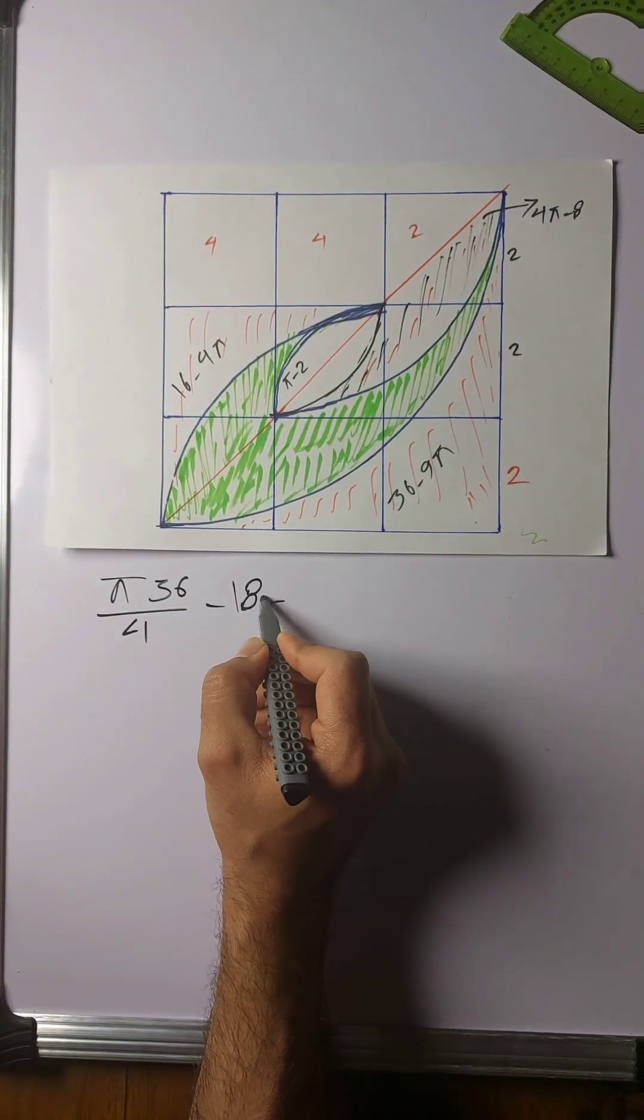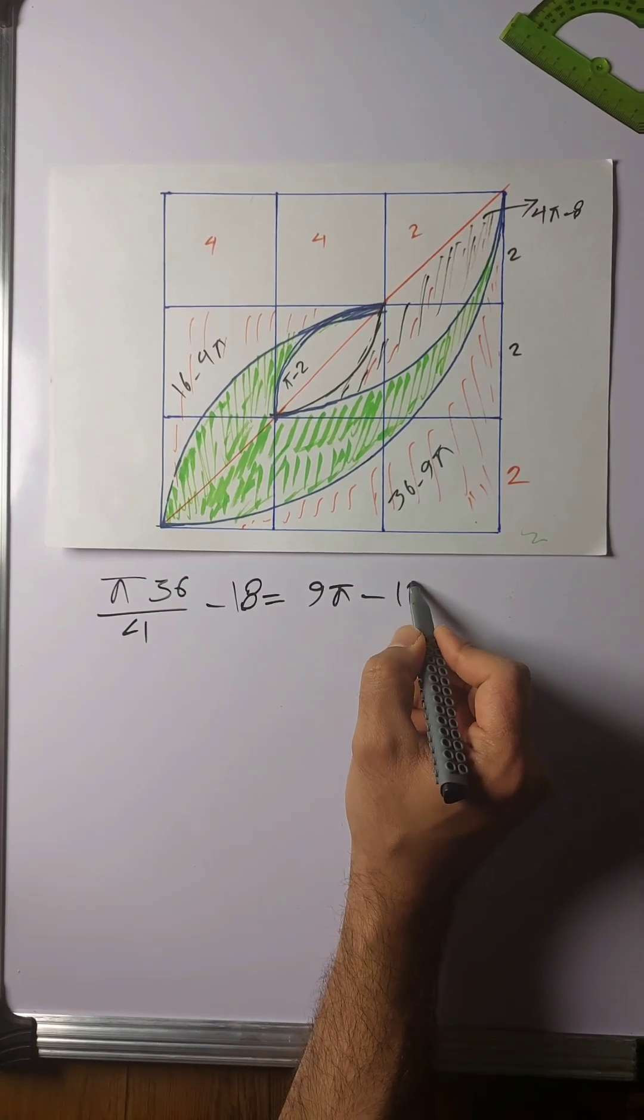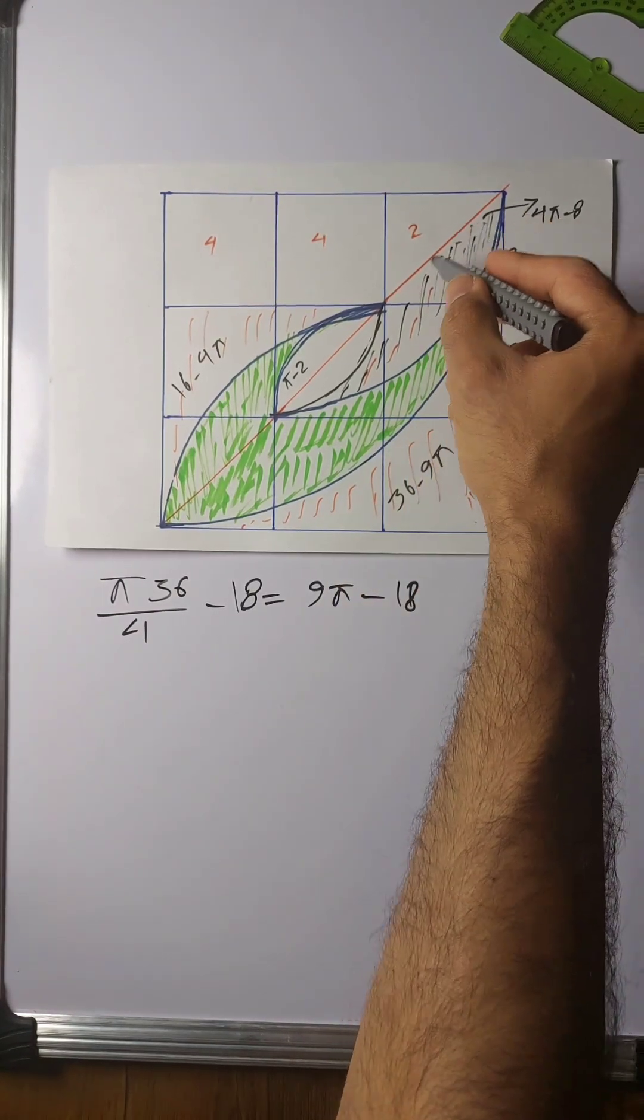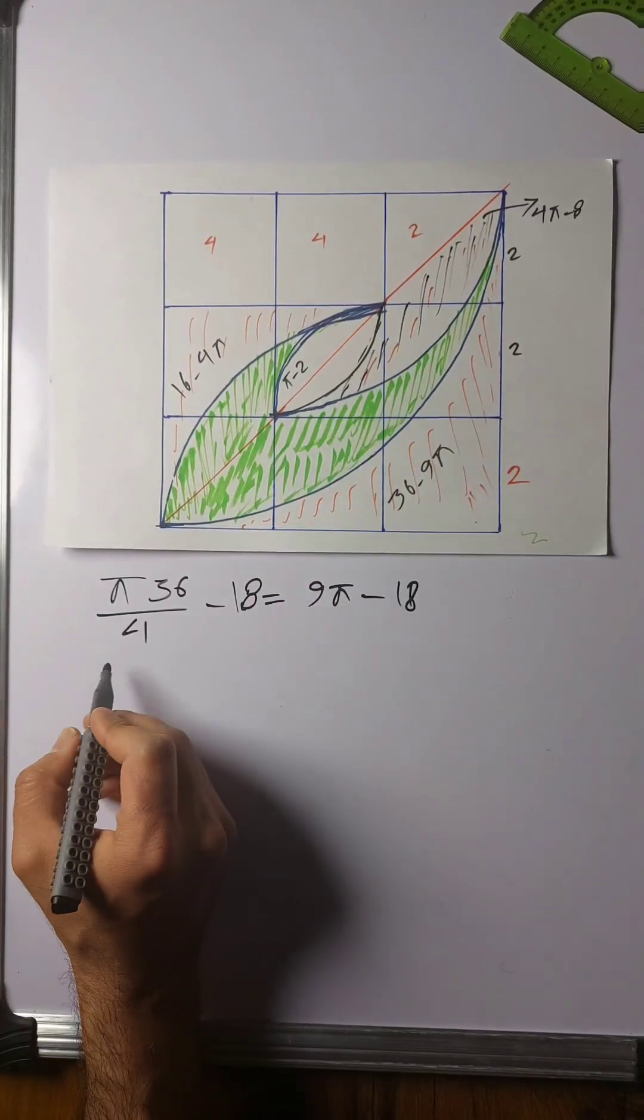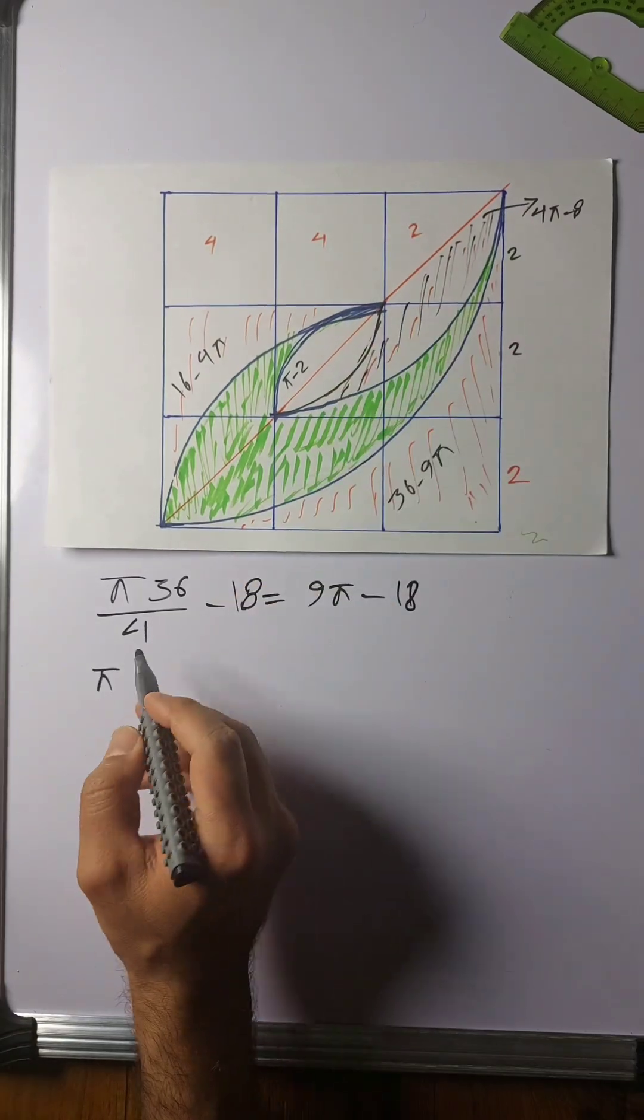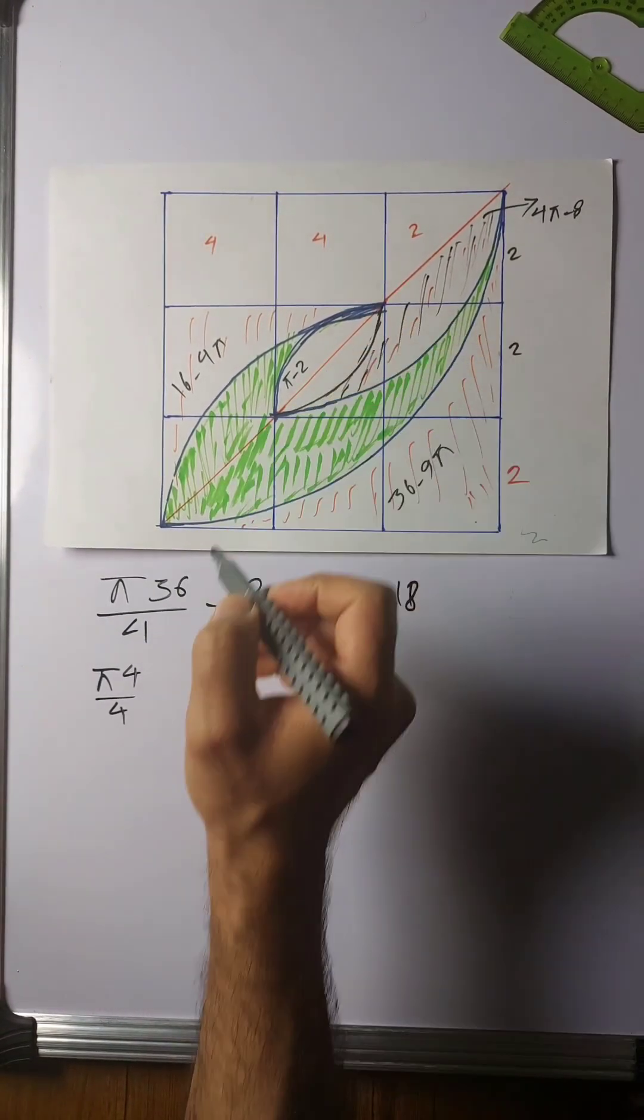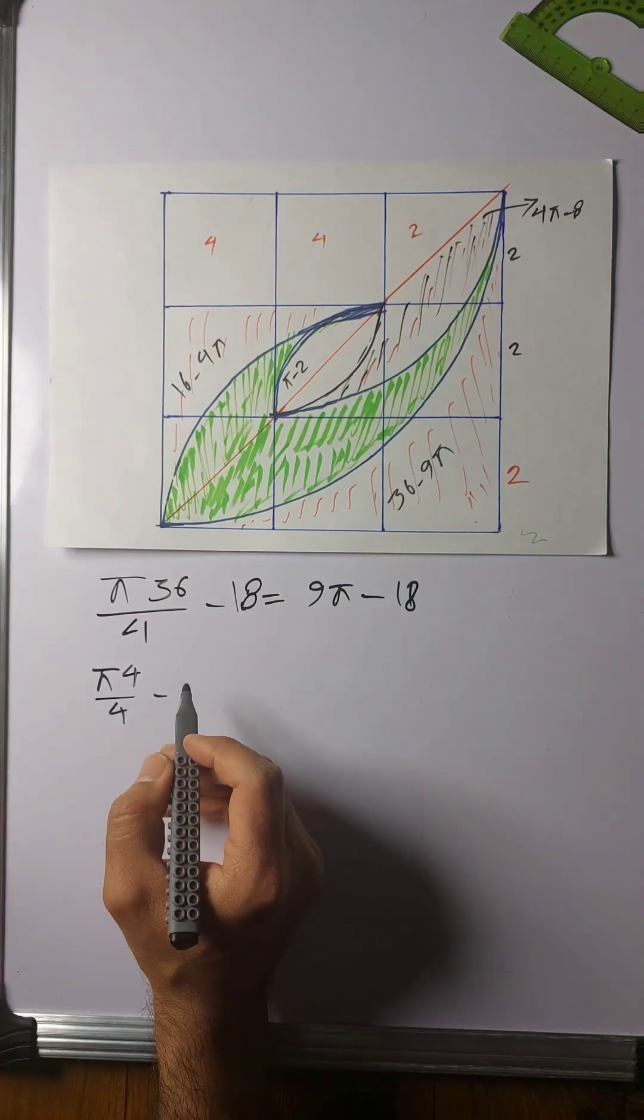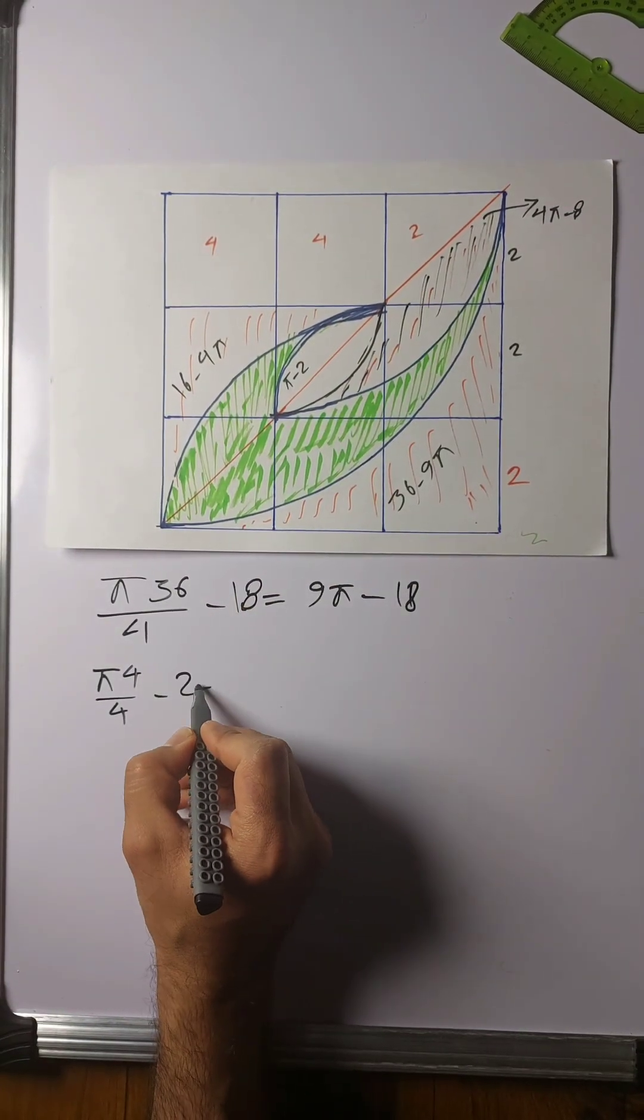Now we're going to find this little segment here as well. So again, π r squared, which is 2 squared here—4 divided by 4—minus the area of this right angle triangle. So 2 times 2 is 4 divided by 2, which is 2. So it is π minus 2.